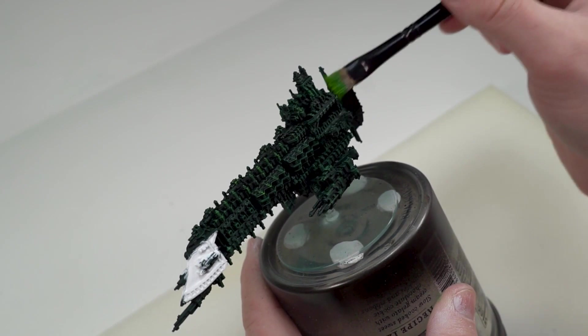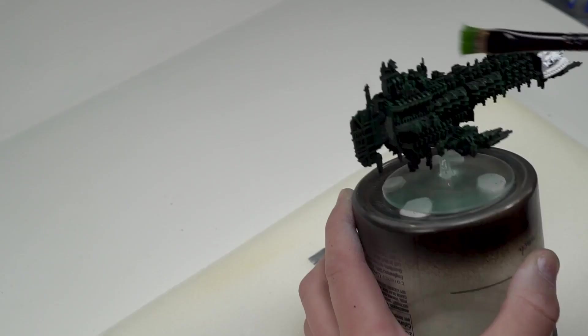Our second and final highlight for the green is a Games Workshop Moot Green. Now depending on how much pressure you are using in the first highlight, I would halve the amount of pressure that you do for this final highlight and that's because this really just needs to be a subtle layer.